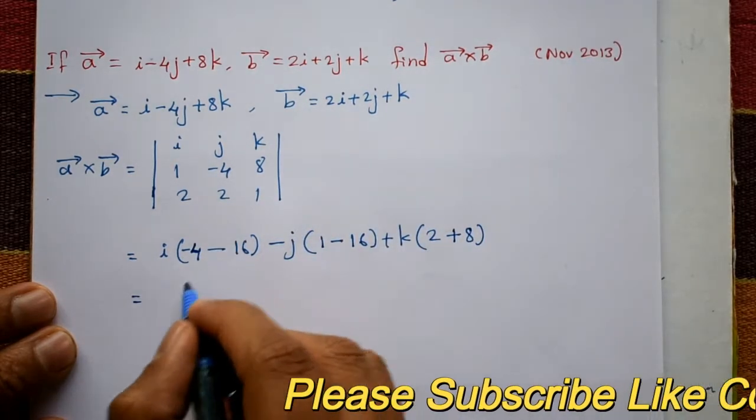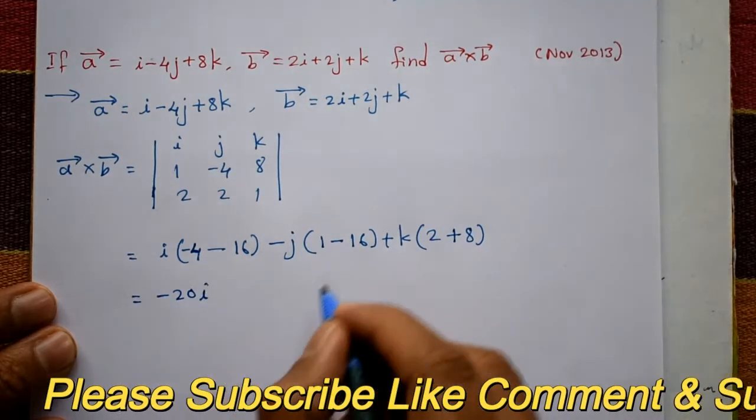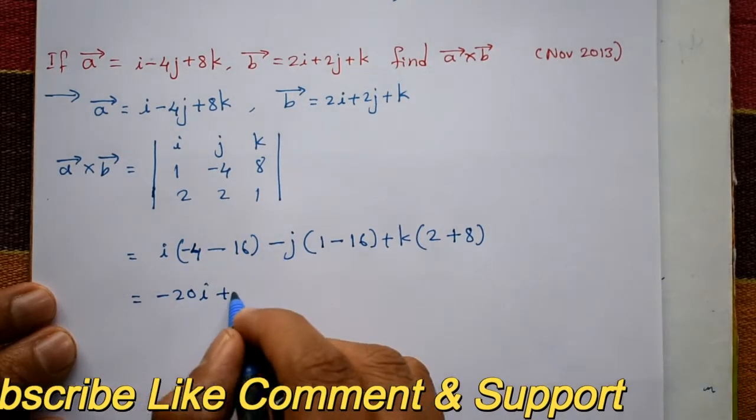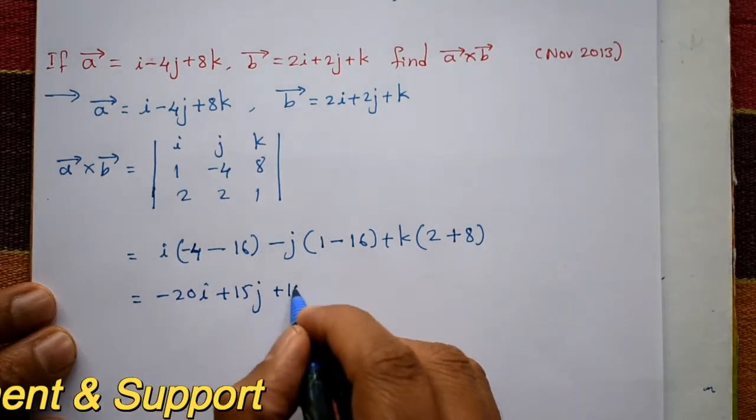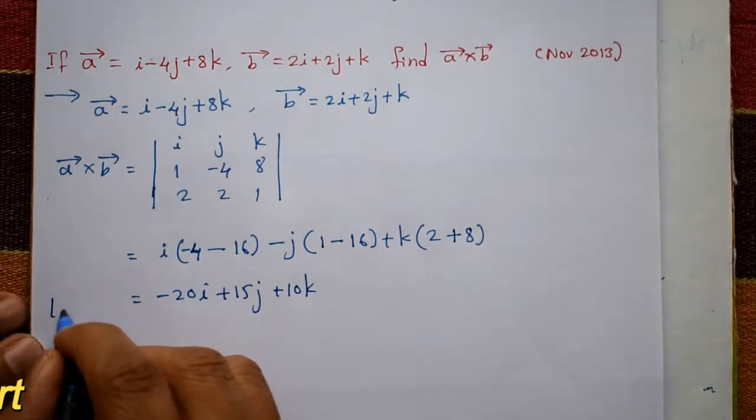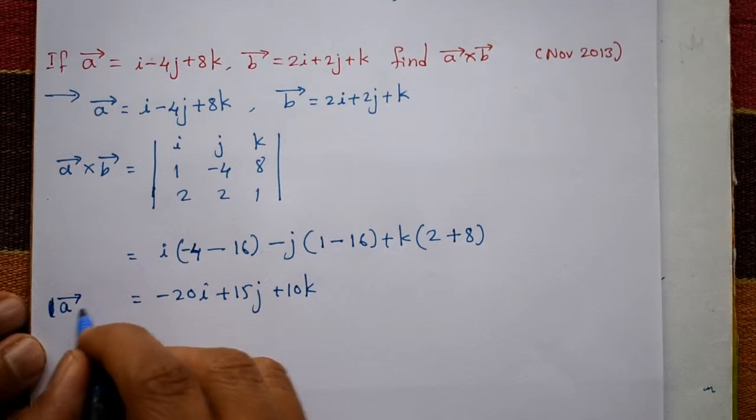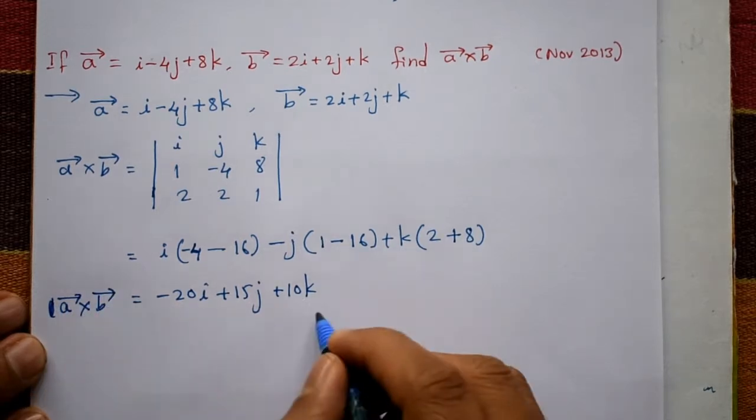And this is equal to minus 20i minus 15, minus j is plus 15j, and this is 10k. Now this is required. I'm sorry, vector a cross vector b, this is the solution.